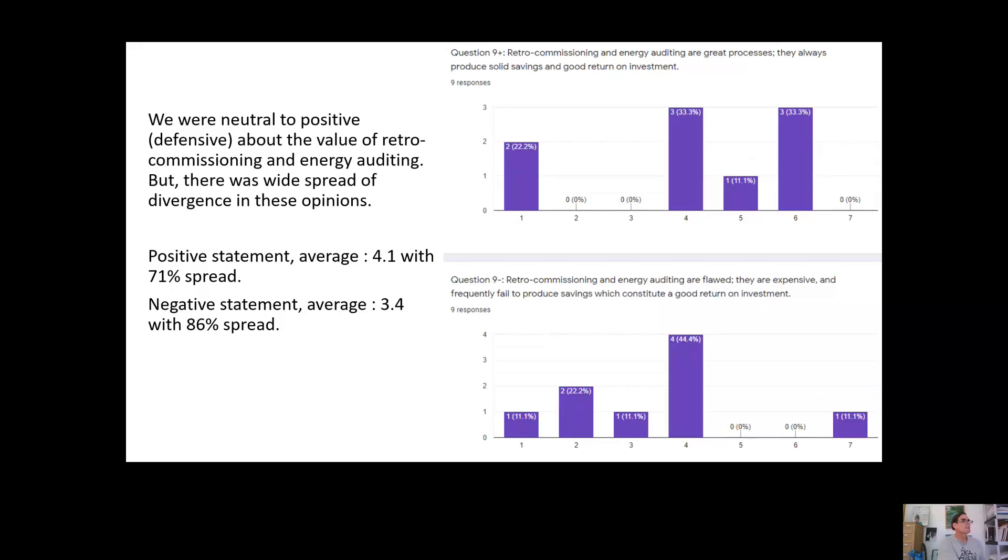Here's question number nine. Retro commissioning and energy auditing are great processes. They always produce solid savings and a good return on investment. What you're going to see here is that we were neutral on this with tremendous divergence. So you see divergence across the scale with an overall neutral. If you think about that positive statement, that should be something, or at least in the future, when we're decarbonizing buildings, if the mission is to decarbonizing buildings, then retro commissioning and energy auditing need to be great processes that always produce solid savings and good return on investment. The fact that we have divergence on this indicates that we have a lot of work to do in the confidence, even amongst ourselves. Imagine how our clients feel.